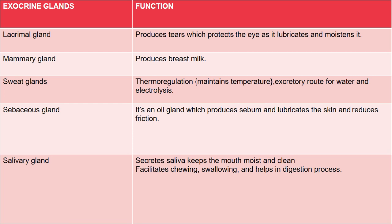Sweat glands help remove waste from the body — from the skin surface and from the face. Sweat is the main product. If we block the pores of our skin, we can get skin problems. That is why if we apply makeup, lotion, or cream, we should keep the pores open. This is also an excretory route for electrolytes.